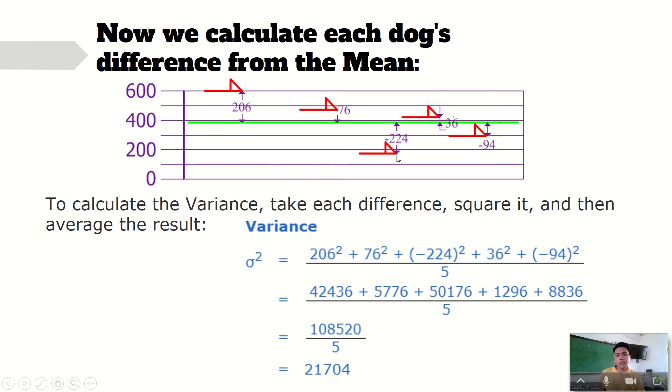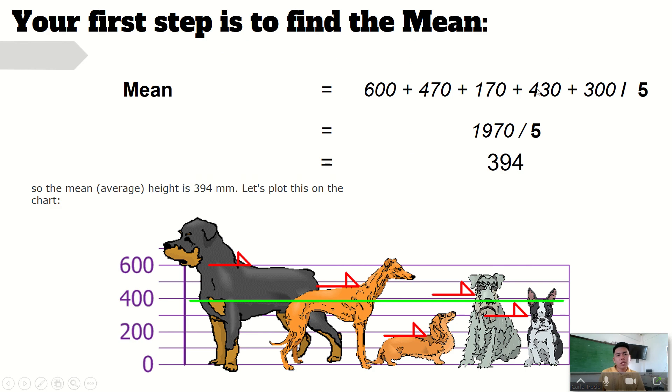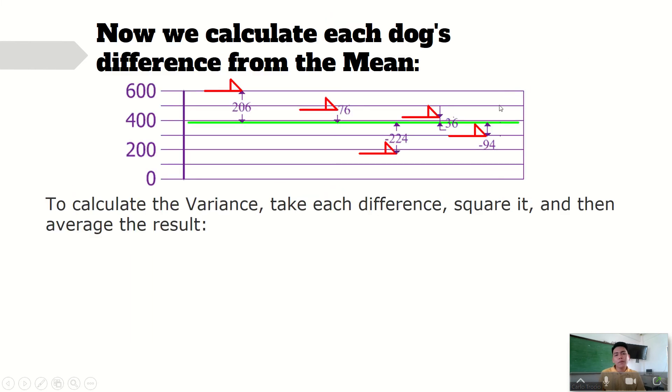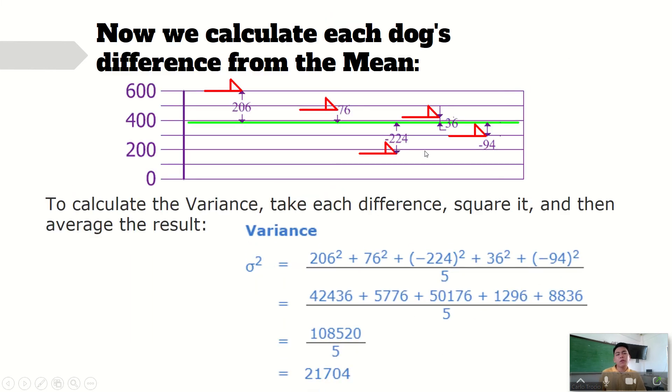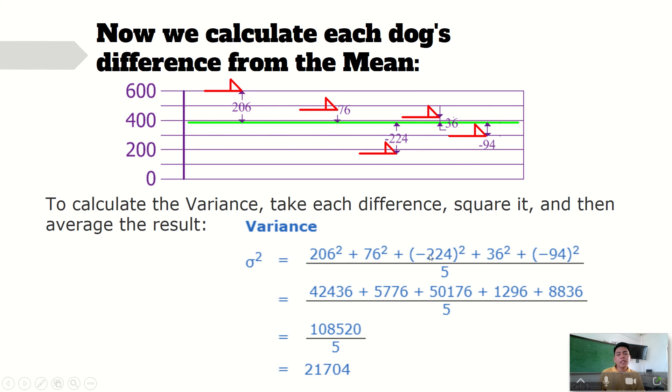And then another example is, since this is below, so you have 170. 170 minus 394, of course that will be equal to negative. And then since we are going to multiply it to itself, or square it, then it doesn't matter at all. We will still be having a positive sign.